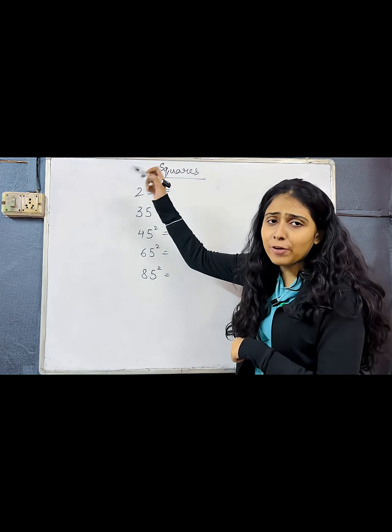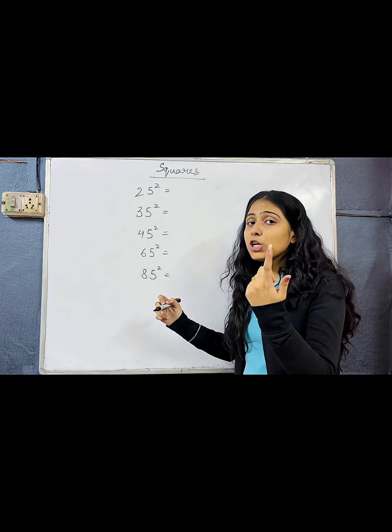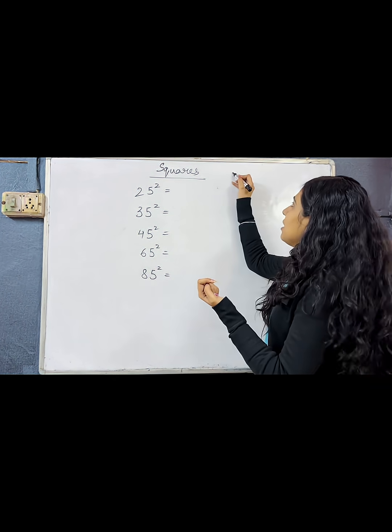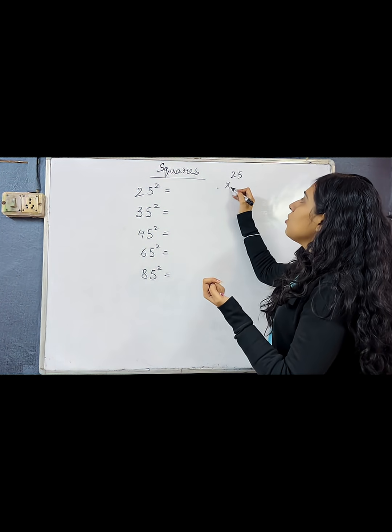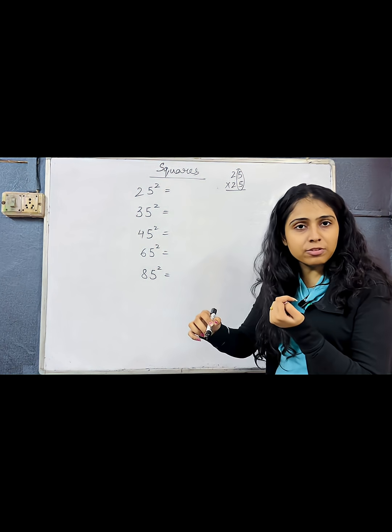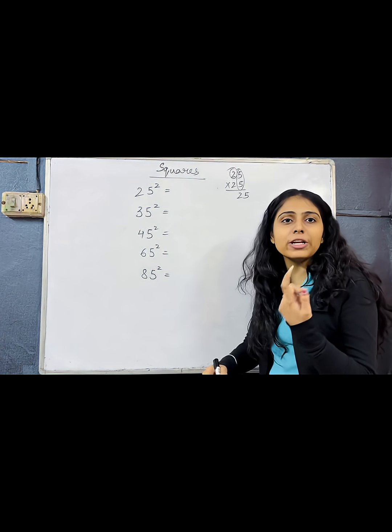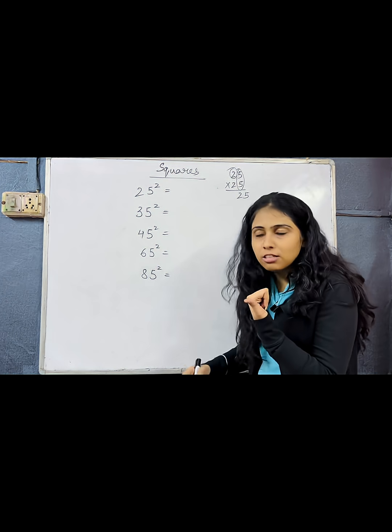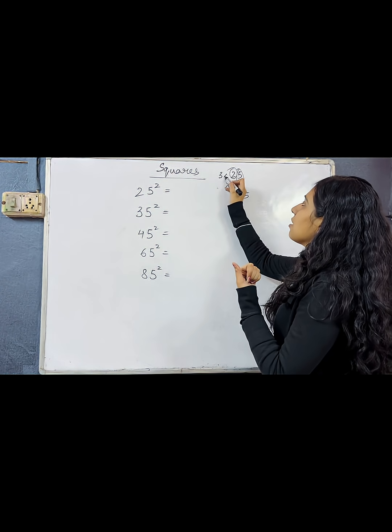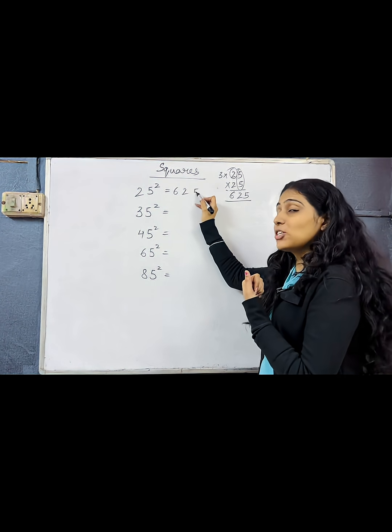If I have to find out the square of 25, 25 square means 25 into 25. Now 5 into 5, 25. What is the next number to 2? 3. 2 times 3 is 6. So the answer is 625.